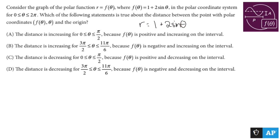In the polar coordinate system for everything between 0 and 2π and including both, which of the following statements is true about the distance between the point with polar coordinates f of theta, theta, and the origin?